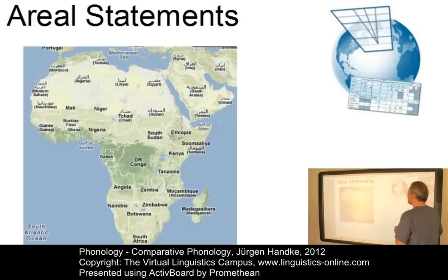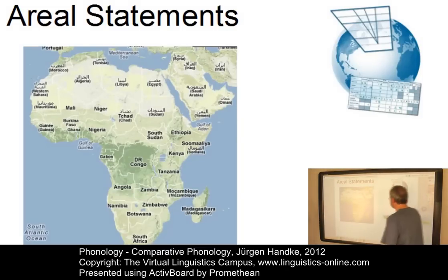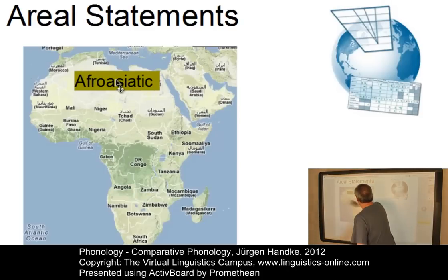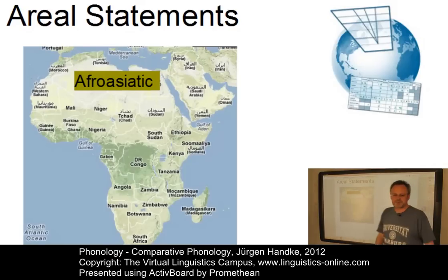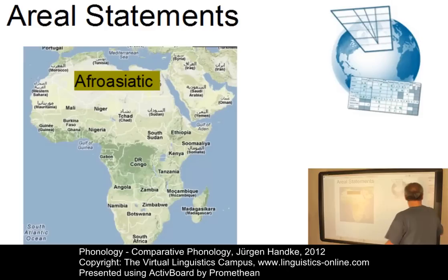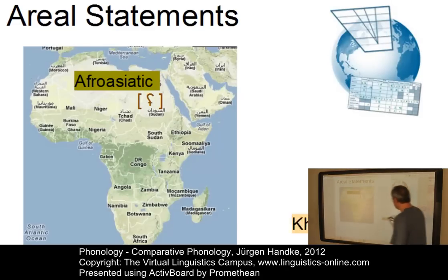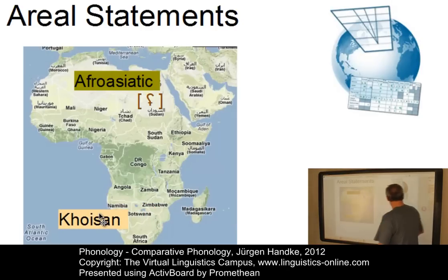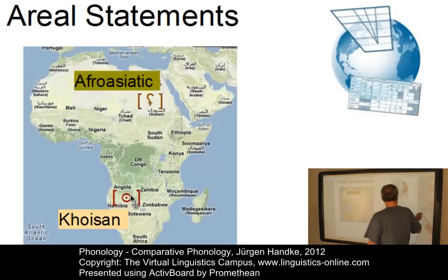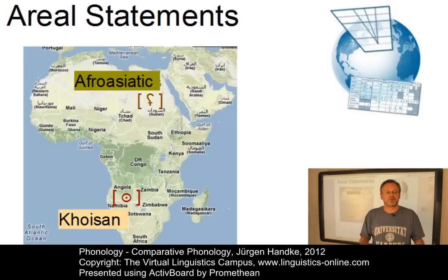Let us take Africa as an example. The Afro-Asiatic languages, which are primarily spoken in the north of the African continent — for example, Arabic — are well known for the occurrence of pharyngeal consonants. Or in the south of Africa, we find the Khoisan languages, and in the Khoisan languages we find as a special feature click consonants — that is, consonants produced with a velaric airstream.